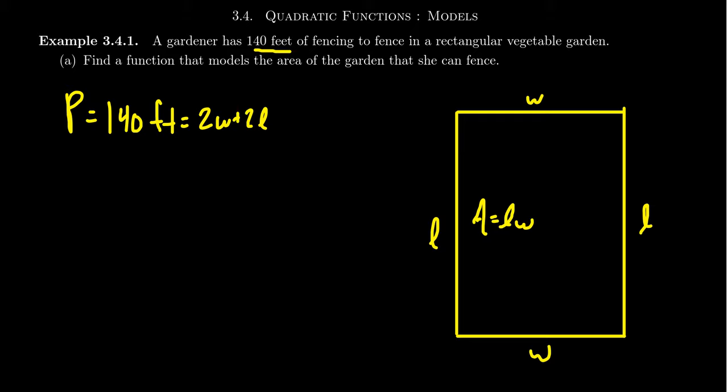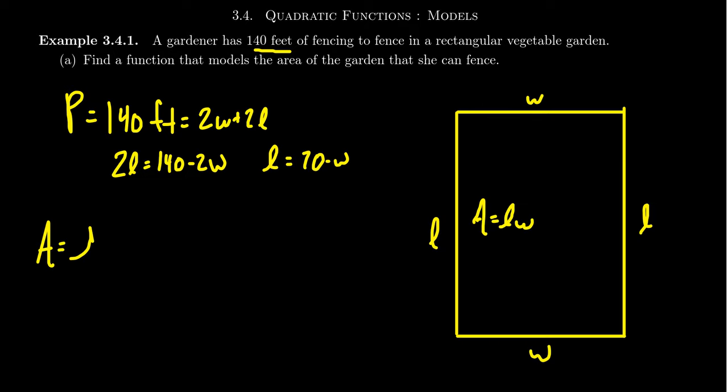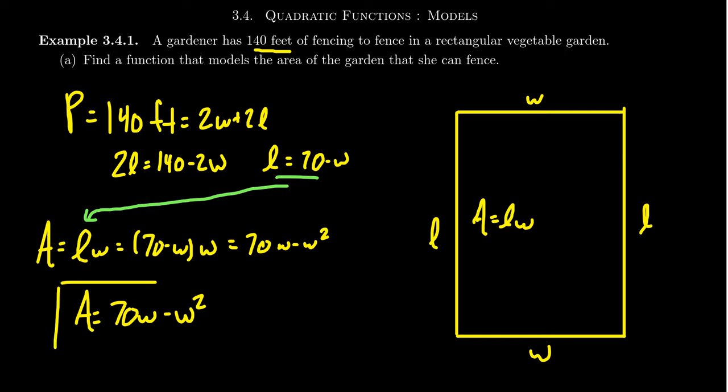With this perimeter formula, we can actually solve for one of the variables. We could solve for length. Notice that 2 times length would equal 140 minus 2w and divide both sides by two. We see that the length is going to be given as 70 minus w. The reason this is useful is now if you come to your equation area is length times width, we could then substitute in the length function and see that area equals (70 minus w) times w. When you distribute the width, you're going to get 70w minus w squared.